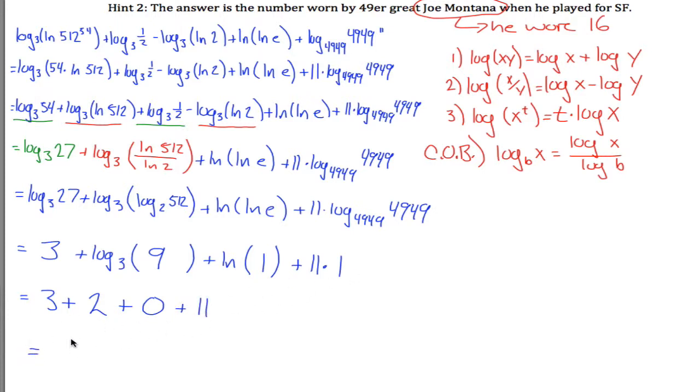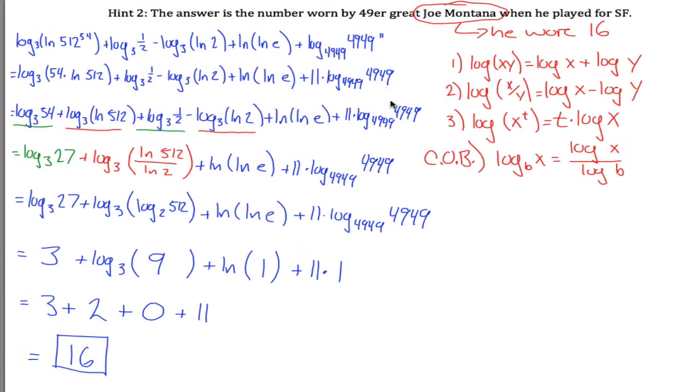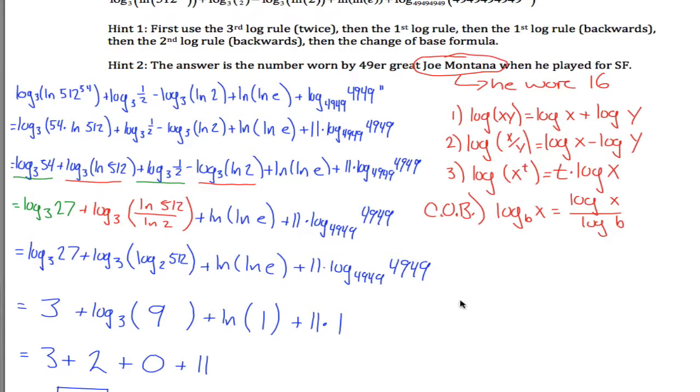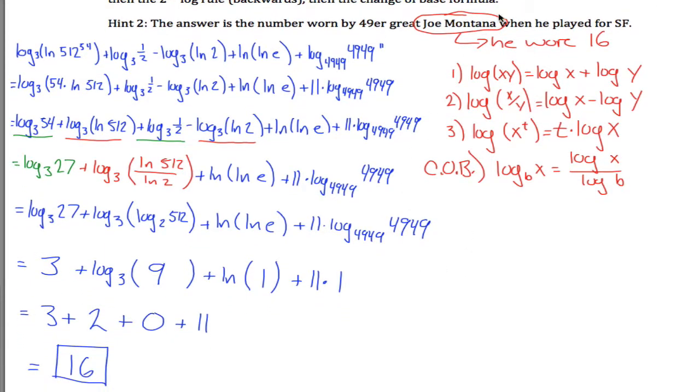And 3 plus 2 is 5 plus 11 is 16. It's awesome because 16 is the number that Joe Montana wore. So that's finally the end of this problem.